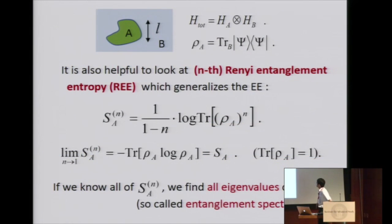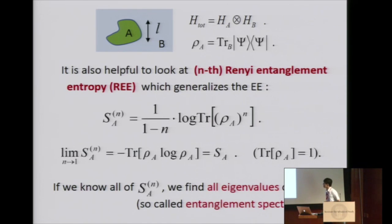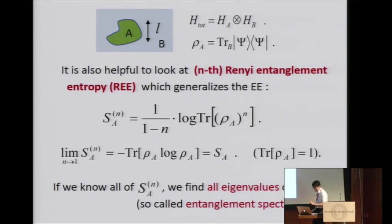At the same time, I'd like to mention that there is another interesting series of quantities called Rényi entanglement entropy, which is defined by this formula. We use this formula in a replica method, and if we take the n goes to 1 limit, we just recover the von Neumann entropy, which is just entanglement entropy. But this is also, in a sense, a one-parameter generalization of entanglement entropy. This is the main quantity which I'd like to focus on in this talk.